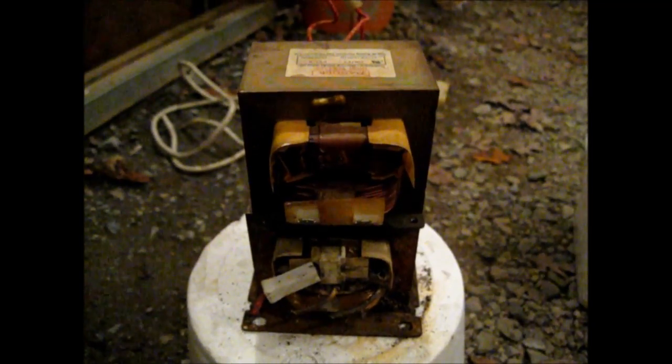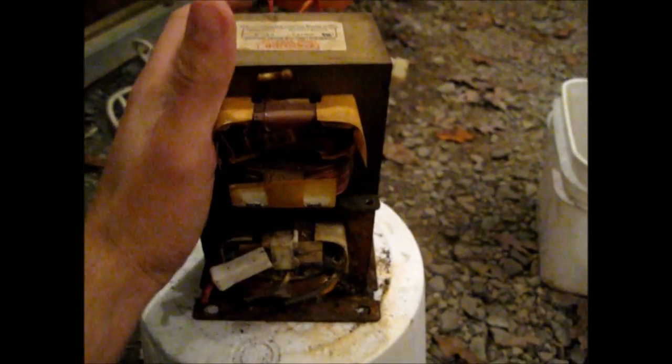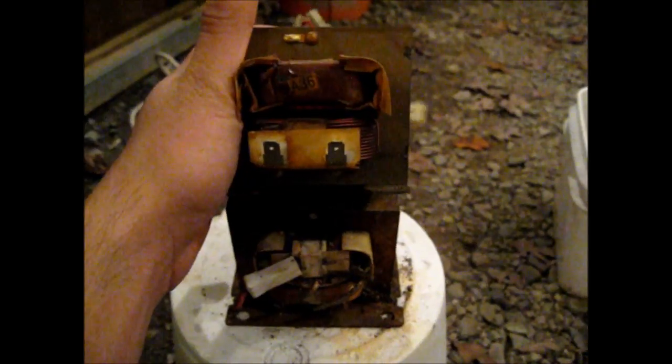This is a microwave oven transformer. It is used in the microwave to produce the roughly 2000 volts necessary to drive the magnetron. Normally these are set up as a step up transformer to step up 120 volts AC to the roughly 2000 volts AC necessary to drive the magnetron.